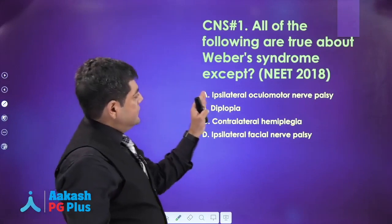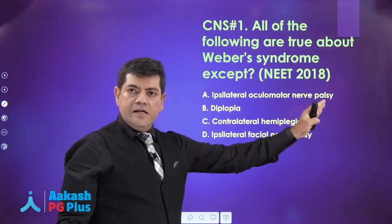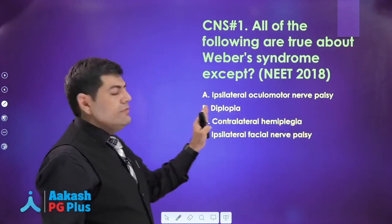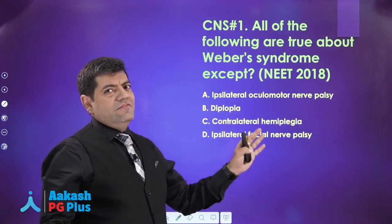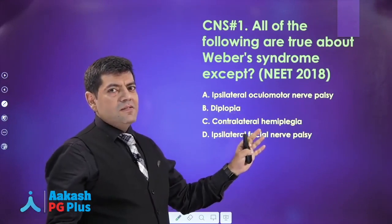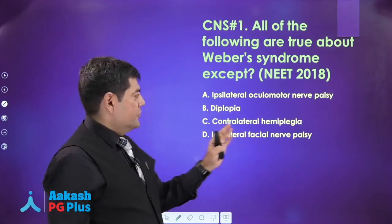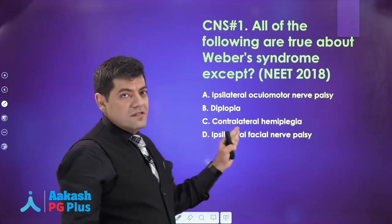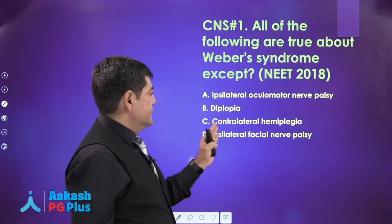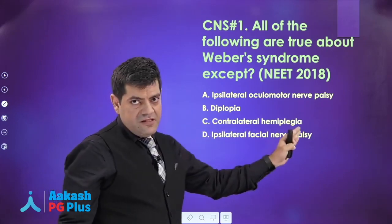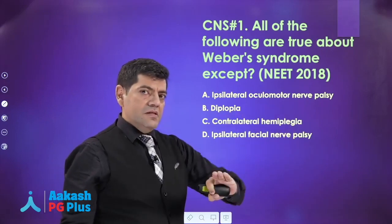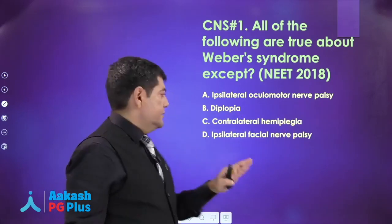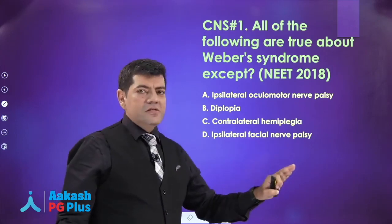Going back to the question: they will have an ipsilateral oculomotor nerve palsy. Why will they have diplopia? One side of extraocular muscle palsy will definitely cause diplopia in certain gazes. Contralateral hemiplegia — Weber's syndrome involves the cerebral peduncle, hence contralateral hemiplegia. Ipsilateral facial palsy is NOT a feature of Weber's syndrome.